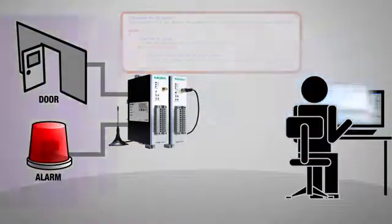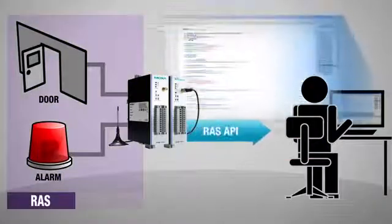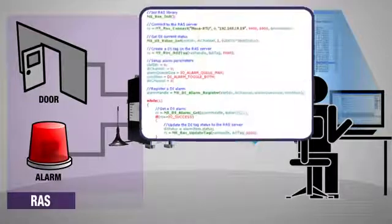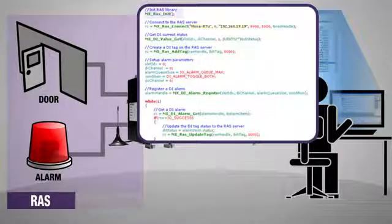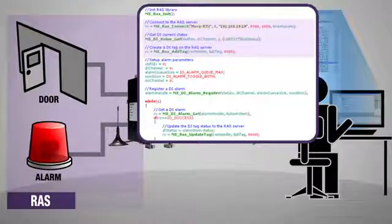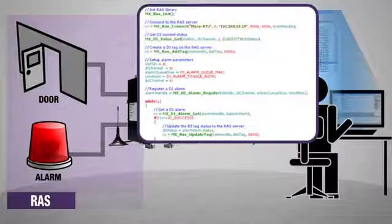When you want to upload I/O information to SCADA, you can use our RAS API. Simply initialize the RAS library, connect to the Moxa OPC server to get the door open status, create a door tag on the OPC server, then update the tag value with SCADA.